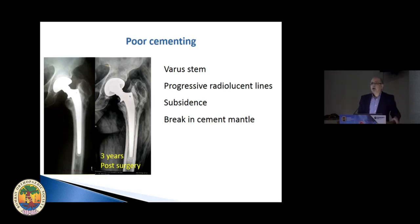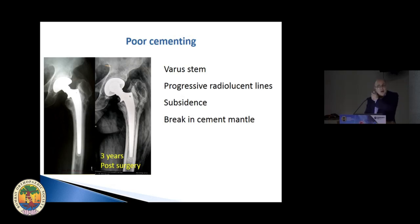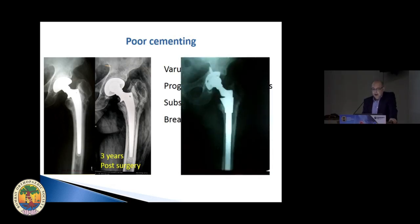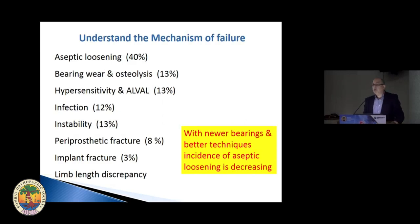Occasionally it's not always poly wear which causes aseptic loosening — you can have poor cementing. Here, just three years post surgery, you can see the stem is in varus and there is very poor cement along the distal end of the stem. You have progressive radiolucent lines, subsidence, and a break in the cement mantle. Remember, a radiolucent line in the cemented hip is not by itself a sign of loosening — the line has to be progressive. This required a revision.